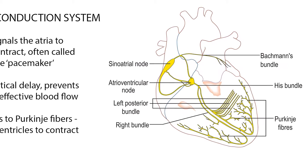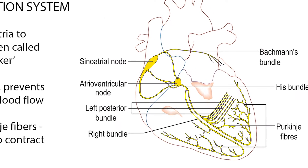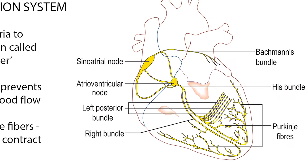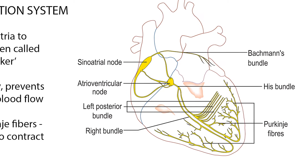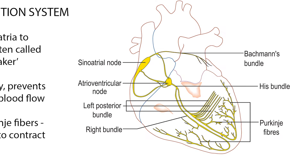The impulse then enters the bundle of Hiss and is transmitted along the bundle branches. The bundle of Hiss splits into two branches in the interventricular septum, which is just the division between the two ventricles. The left bundle branch activates the left ventricle and the right bundle branch activates the right ventricle. The right and left bundle branches taper out to form many Purkinje fibers, activating the ventricular walls almost simultaneously.